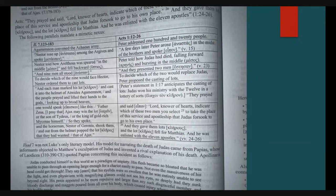One would speak like this: Father Zeus, I pray that Ajax may win the lot, or the son of Tydeus, or the king of gold-rich Mycenae himself. So they spoke. And said, Lord, knower of hearts, indicate which of these two men you select to take the place of the service and apostleship that Judas forsook. And the horseman Nestor of Gerenia shook them, and out of the helmet popped the lot that they had wanted, that of Ajax. And they gave them lots, and the lot fell for Matthias, and he was enlisted with the eleven apostles.